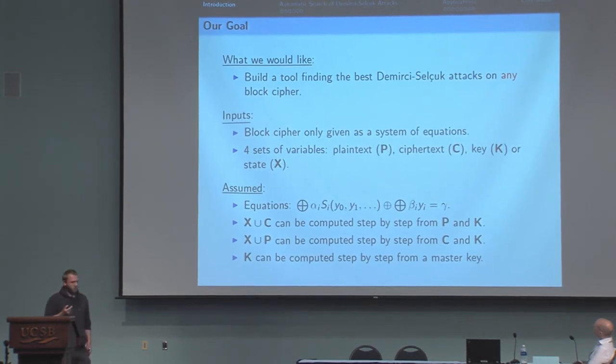What we wanted to do with Pierre-Alain was to build a tool finding the best Demirci-Selçuk attacks on almost any block cipher. The tool takes as input a system of equations describing the block cipher together with the categorization of variables. We impose that equations of this type, where the S-boxes are seen as black boxes, except for the binary operations XOR and AND that we handle a bit differently.